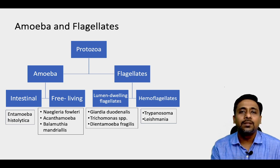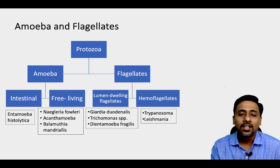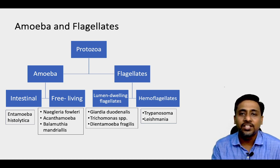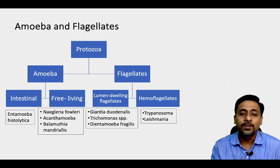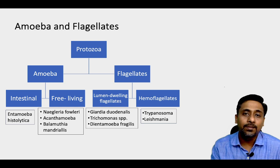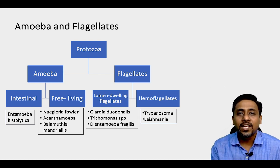The pathogenic intestinal amoeba is Entamoeba histolytica. There are other Entamoebas present but those are non-pathogenic. The free-living amoeba are Naegleria fowleri, Acanthamoeba species, and Balamuthia mandrillaris. Among flagellates, there are two types: lumen-dwelling flagellates and haemoflagellates. The commonest pathogenic intestinal flagellate is Giardia duodenalis and the pathogenic genital flagellate is Trichomonas species. Dientamoeba fragilis is an amoeboflagellate. Haemoflagellates include Trypanosoma and Leishmania.